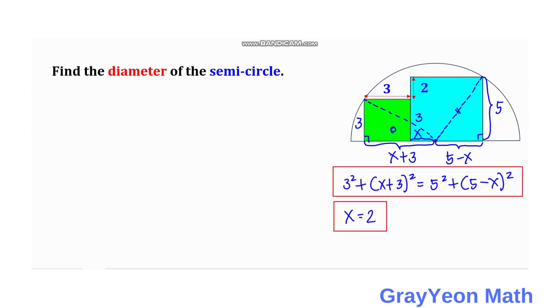So the diameter of the circle is simply 2r, but r is equal to 2 times the square root of 3 square plus x times x plus 3, which is x plus 3 square.